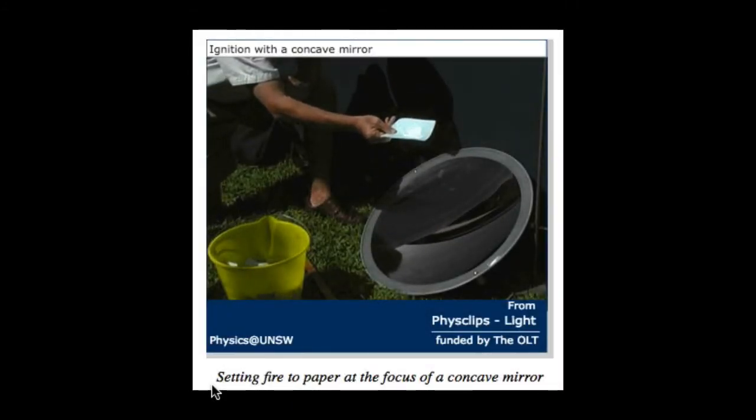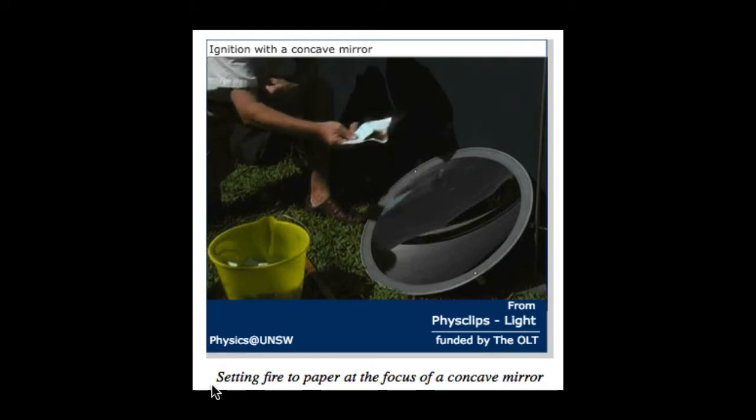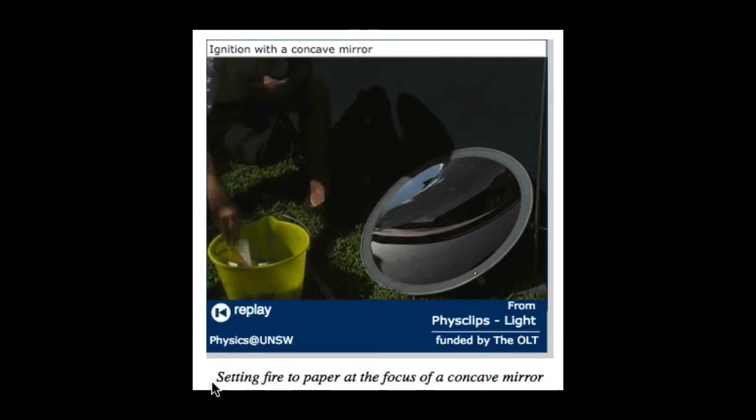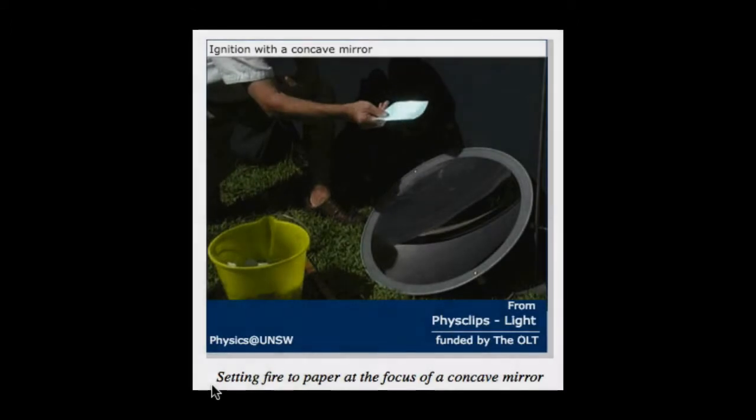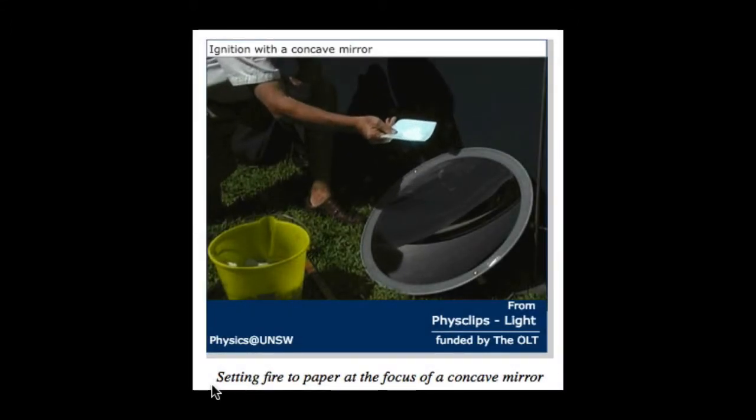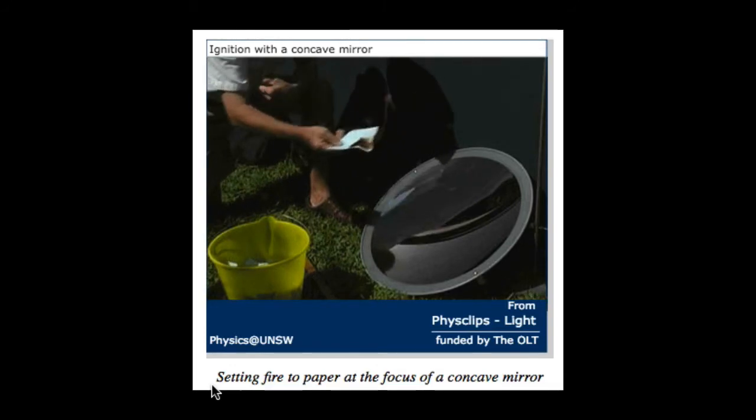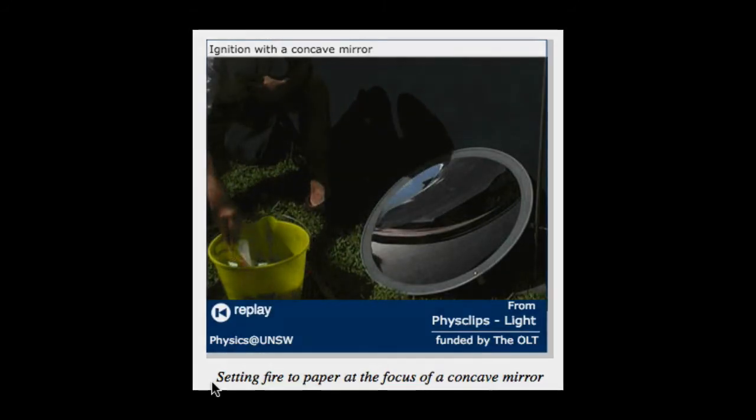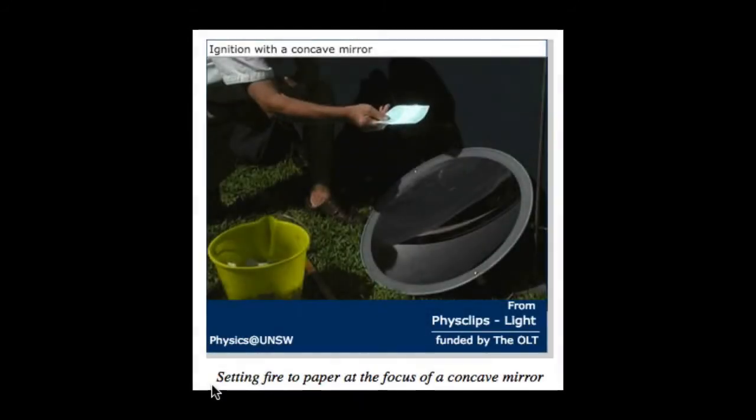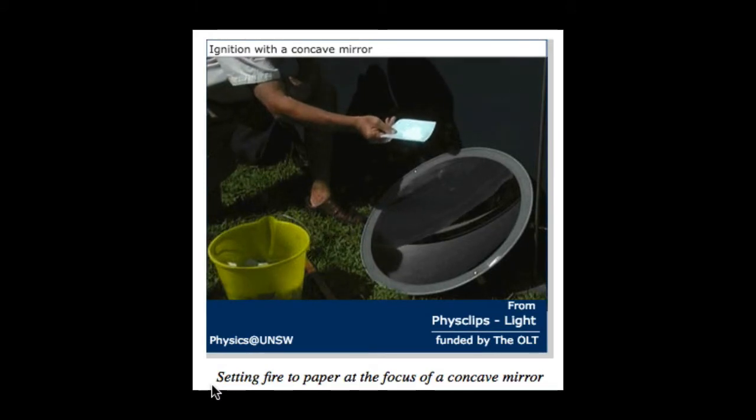So now we're going to start looking at curved mirrors. In this little clip which has been taken from Fizz Clips, you can see Joe holding a piece of paper in the focal point of a curved mirror. And you can see how it actually ignites the piece of paper. It's that hot there. The sun's light is all being concentrated to that point.